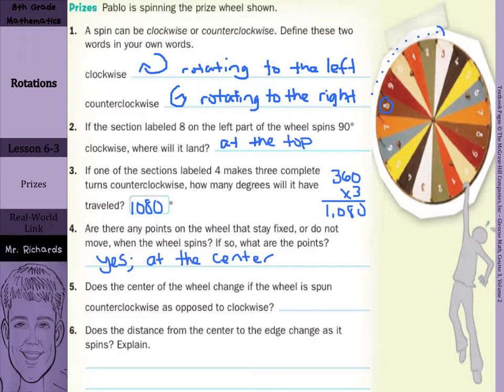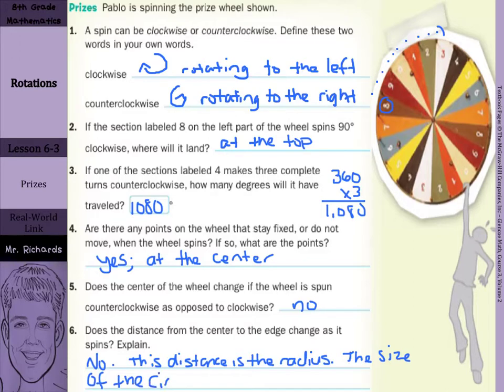Does the center of the wheel change if the wheel is spun counterclockwise as opposed to clockwise? Well, if it's not moving, no. And does the distance from the center to the edge change as it spins? No. This distance is the radius. The size of the circle does not change by rotating.